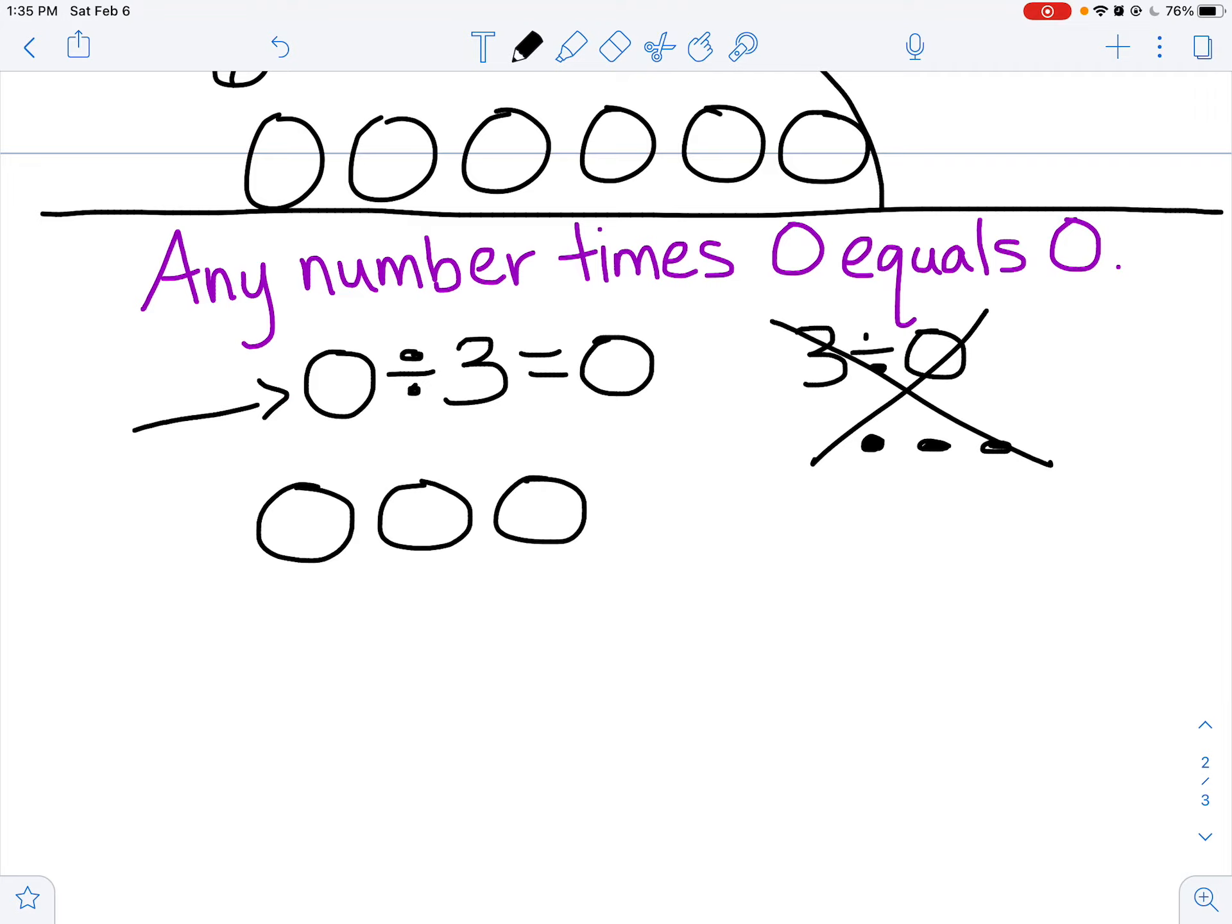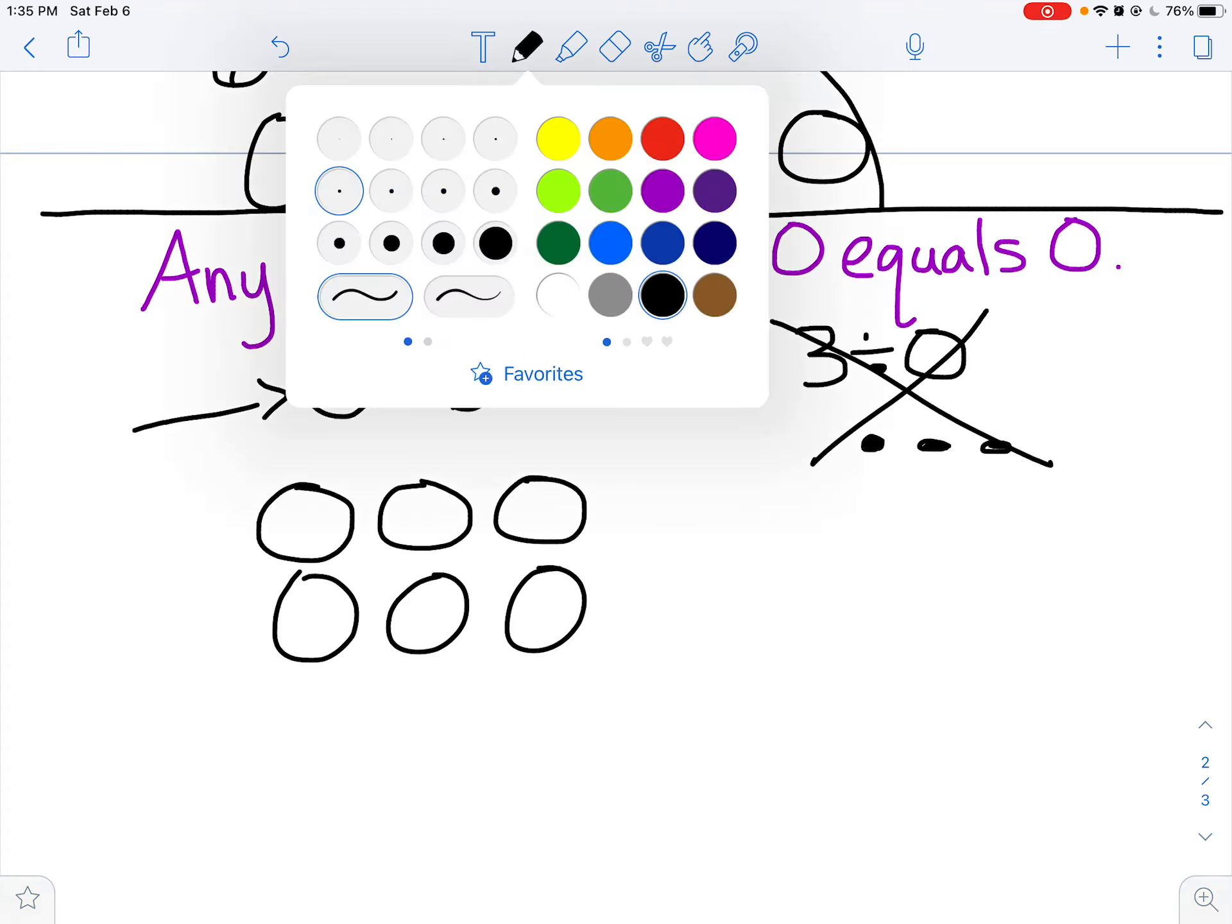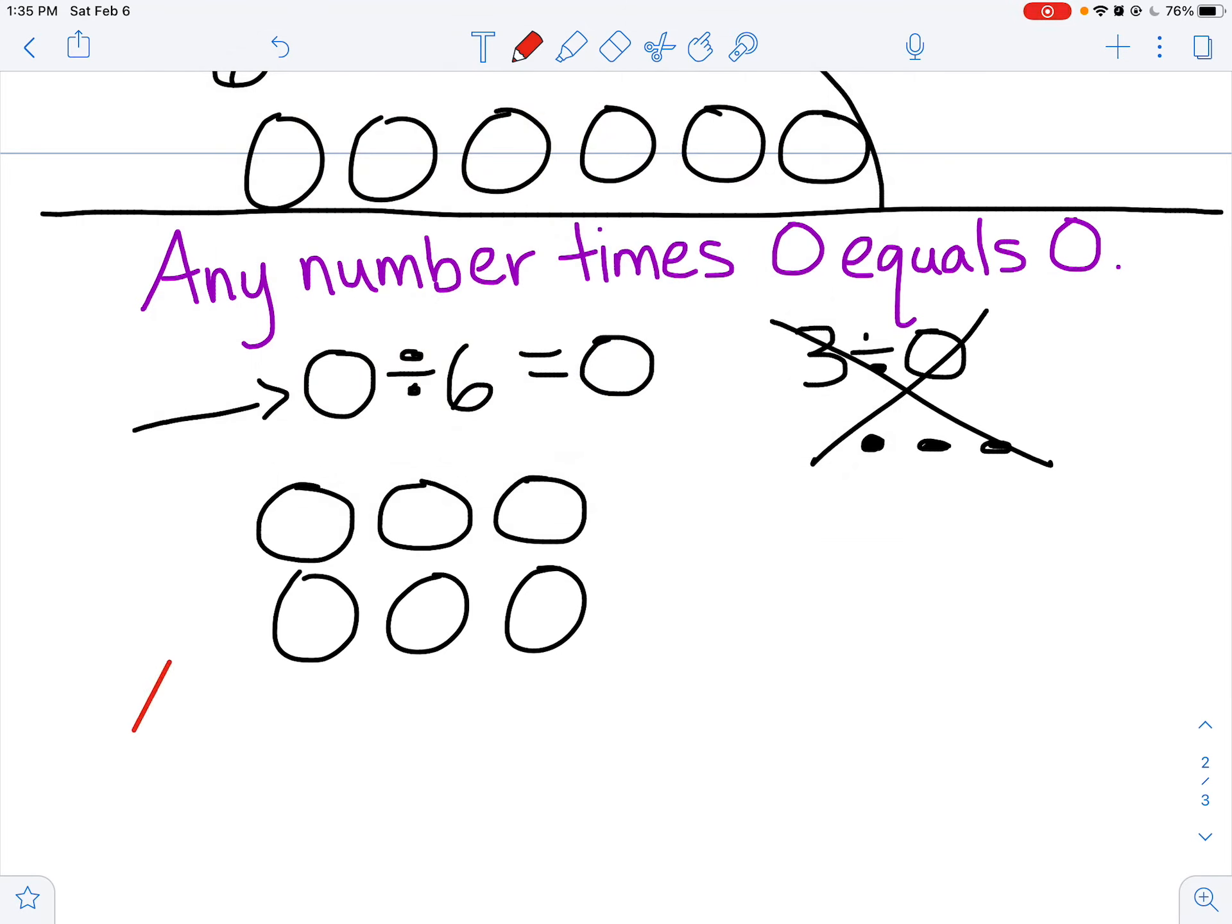But you will see equations like this. If I have 0 items divided into 3 groups, divided into 6 groups, however many groups, it's still going to be 0 because I have no items. So that leads us to another important rule that 0 divided by any number equals 0.